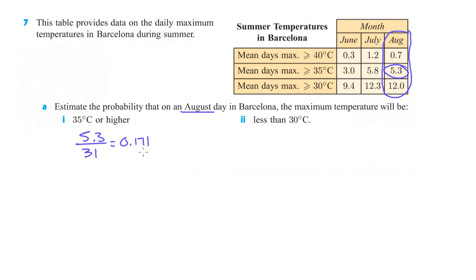Okay, probability is usually left as a decimal, so we'll just leave it as 0.171. Alright, and then part two here says, what's the probability that it's going to be less than 30 degrees?